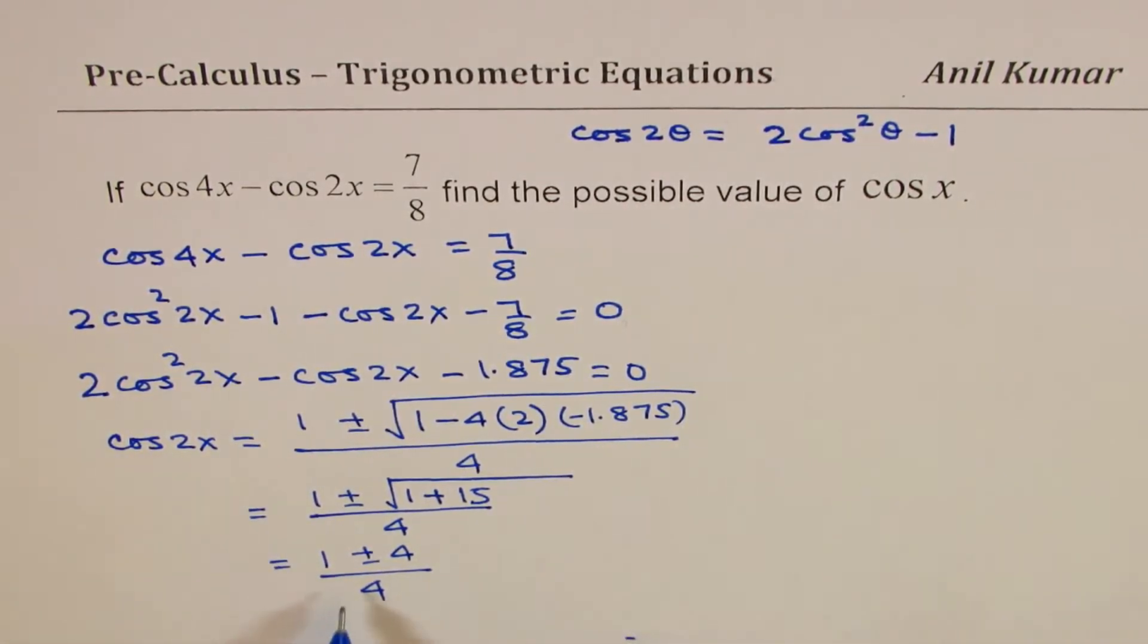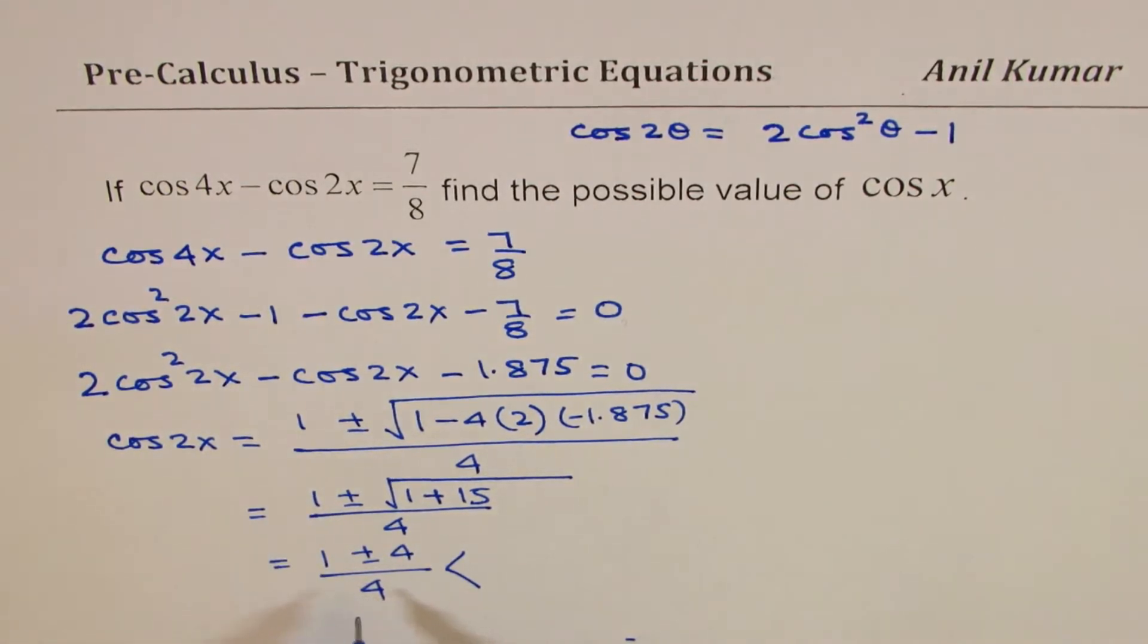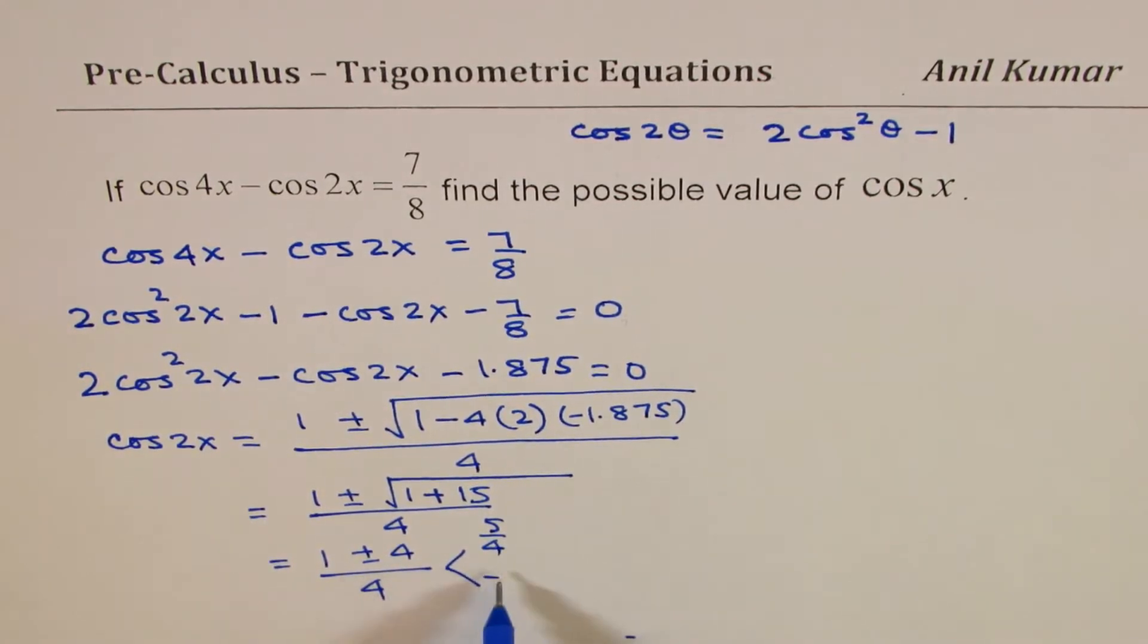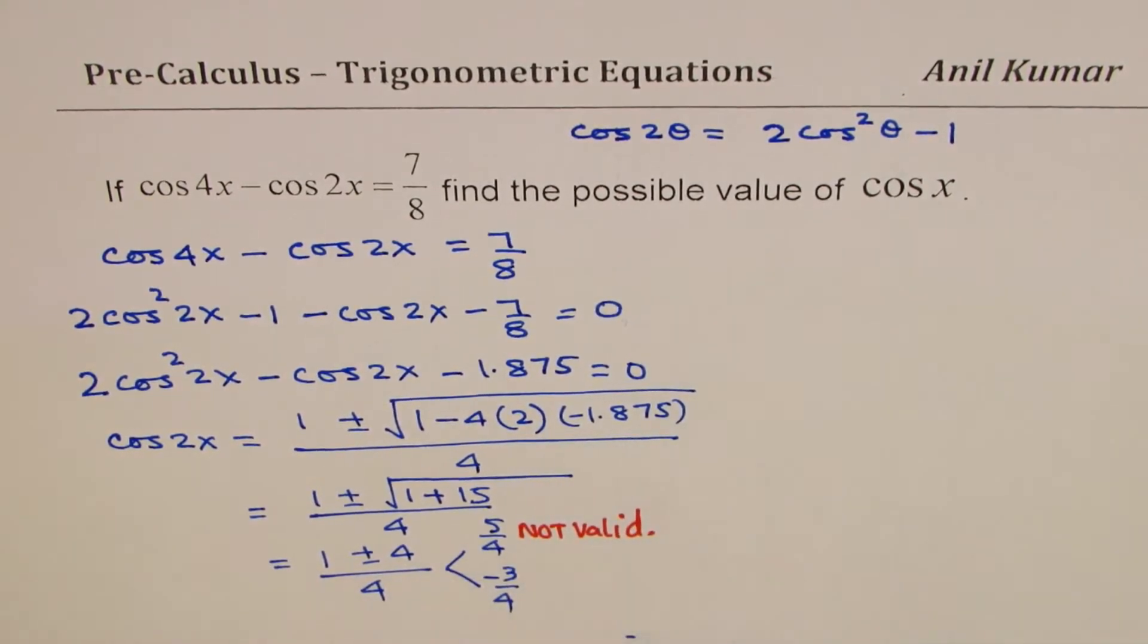We get cos 2x as one of these possible solutions. Now cos 2x has to be between plus and minus 1. So one value is 5 over 4, the other one is minus 3 over 4. Now 5 over 4 is not valid, so we'll go with the value of minus 3 over 4.